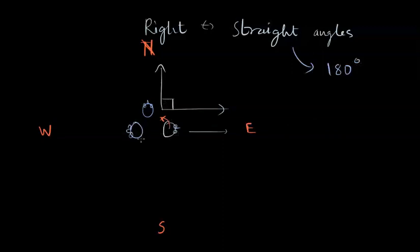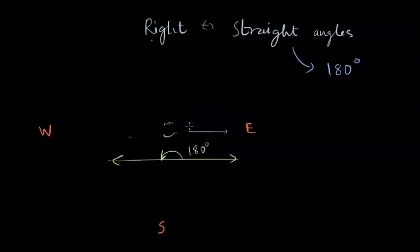And if I have my eyes now towards west, I have turned anti-clockwise in a straight angle and I would look at west. Through a diagram, this is the angle that I've turned in. So a right angle is a 90-degree angle and a straight angle is a 180-degree angle.